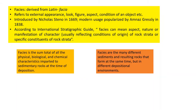So facies is the sum total of all the physical, biological and chemical characteristics imparted to sedimentary rocks at the time of deposition. For example, we have a fossiliferous limestone. The fossils which are constituents of those rocks at the time the rock was being deposited will define that type of facies. Similarly, if we have a sandstone which consists of red beds with iron content in it, that iron content which got included in that sedimentary bed will become its facies.